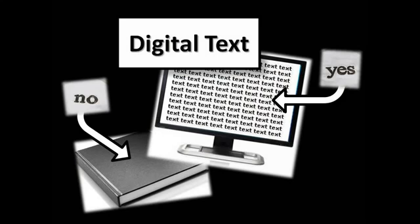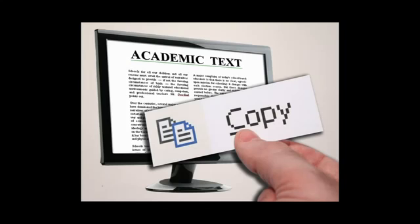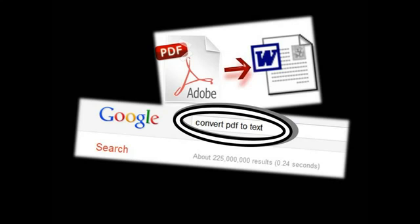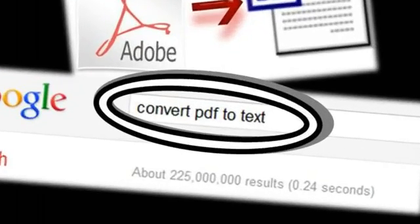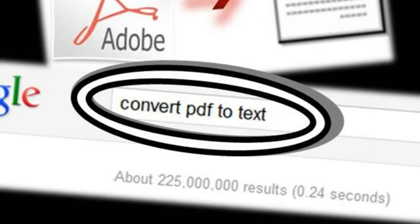Text Profiler works with digital texts, so you will need to make sure you are using a digital text. Digital texts are texts you can copy. If you need to convert a PDF image file to a digital text, then do a Google search for Convert PDF to Text.